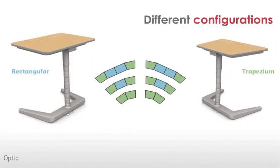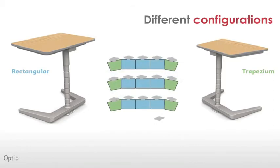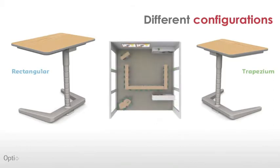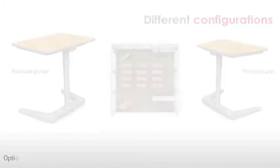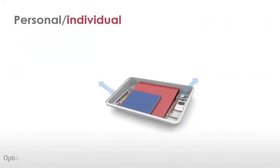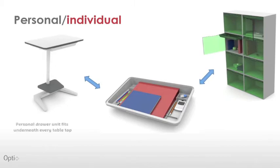This means that the idea that each student needs to have his personal individual table is getting less important. Much more important is the fact that each student can sit in a comfortable, ergonomic way on site where they need to be and where they have a place to put their personal belongings.